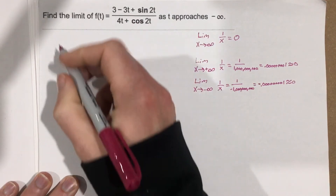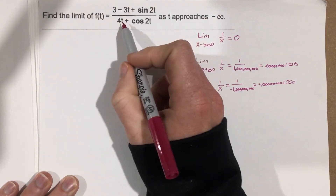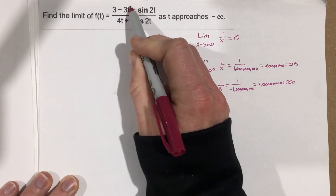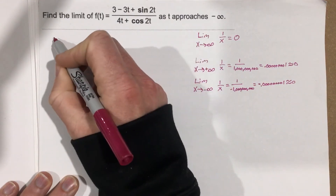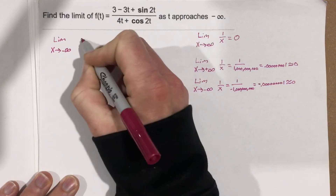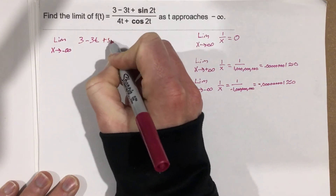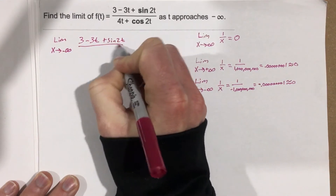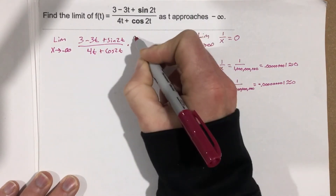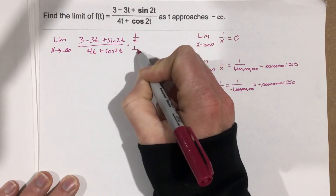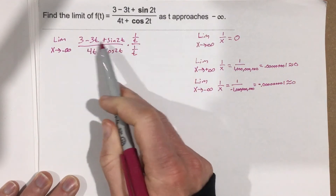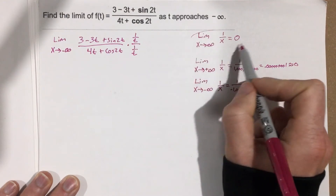Let's see what that looks like here. The highest power in this problem is t to the first power, so I'm going to take the function — the limit as t approaches negative infinity of 3 minus 3t plus sine of 2t all over 4t plus cosine of 2t — and multiply it by 1 over t on top and 1 over t on the bottom. Notice I'm still multiplying by 1, so I'm not actually changing the expression, just altering how it looks to use this property.